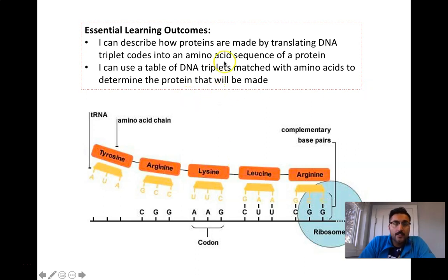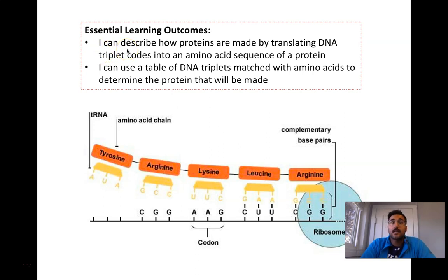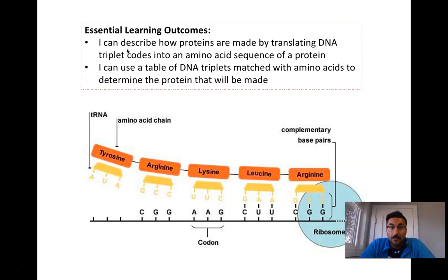Hi again, Science 30. We are going to continue our discussion of DNA and more specifically protein synthesis. We're going to talk about how proteins are made by a process called translation — taking codons, basically sections of three base pairs of DNA, and coding them into an amino acid sequence, which will then make a protein.